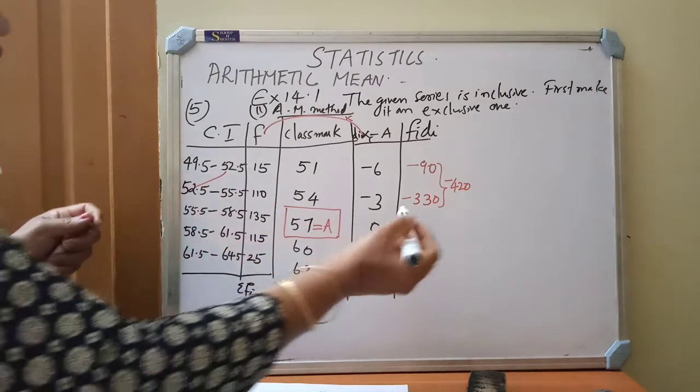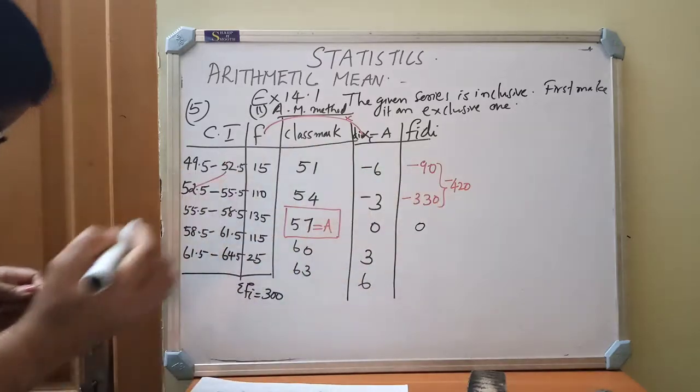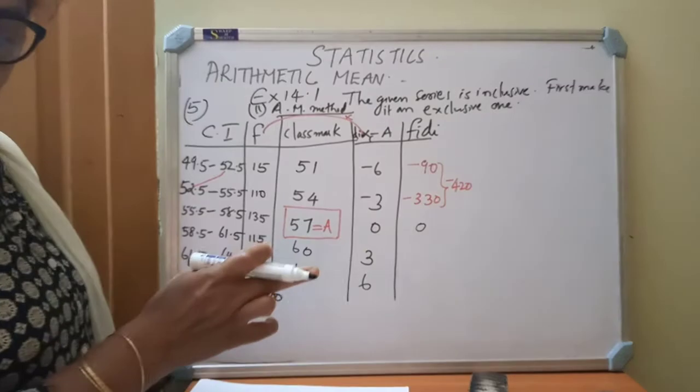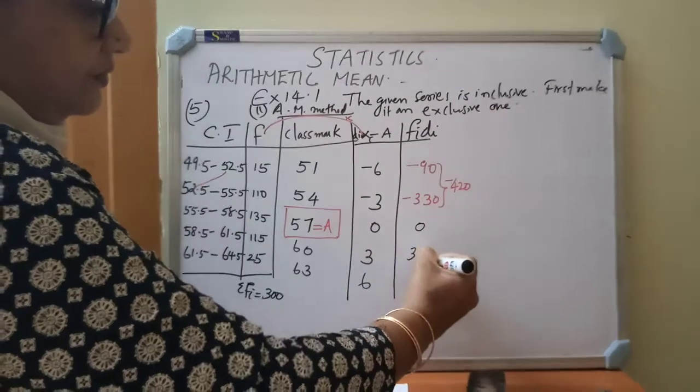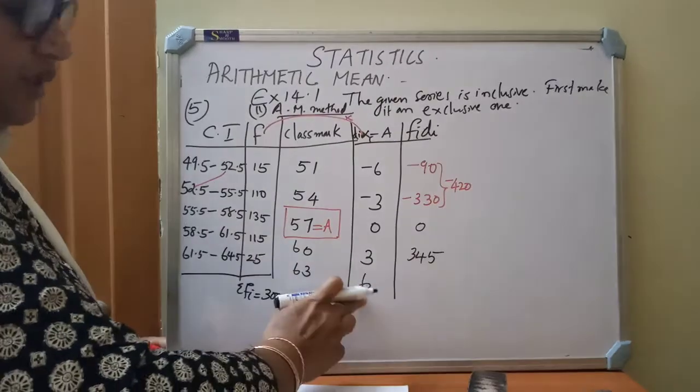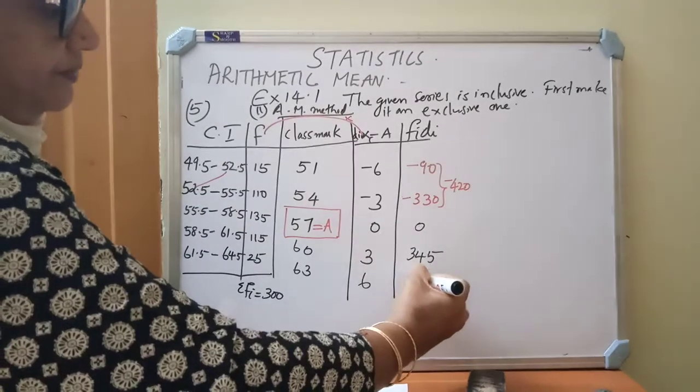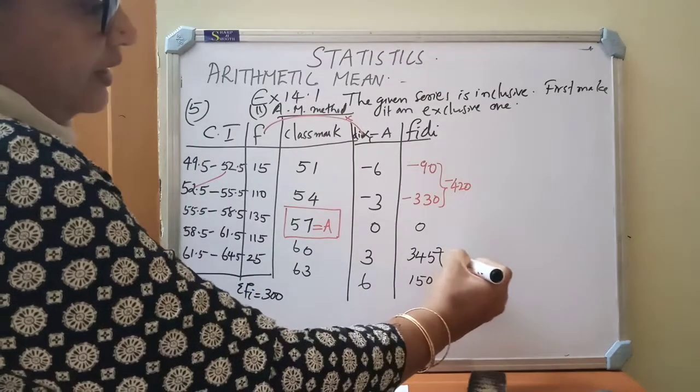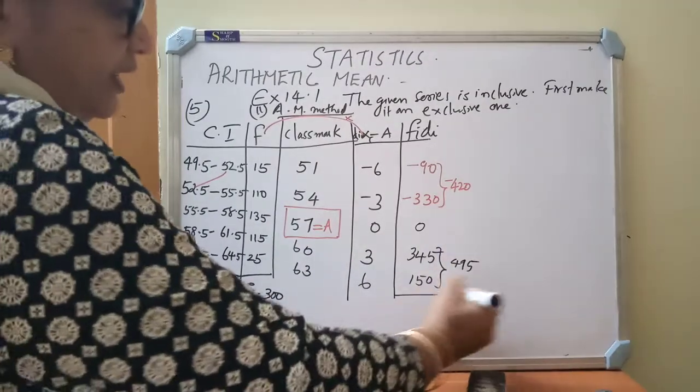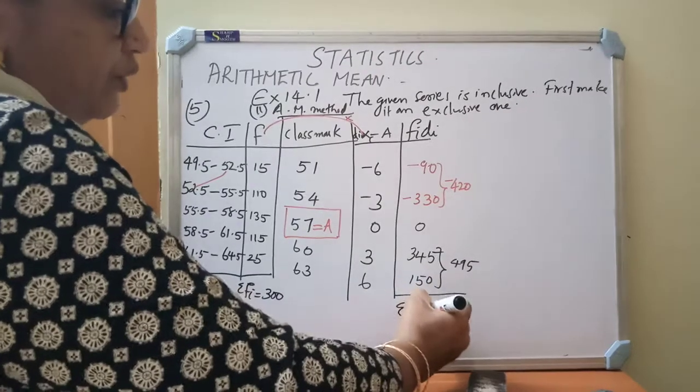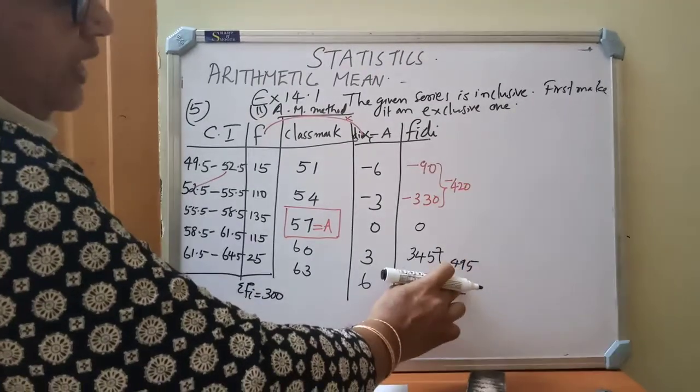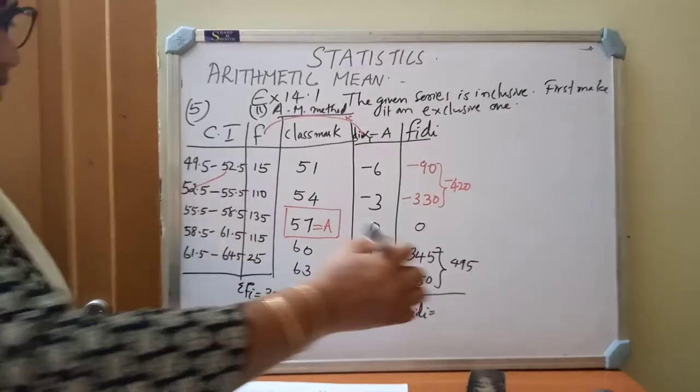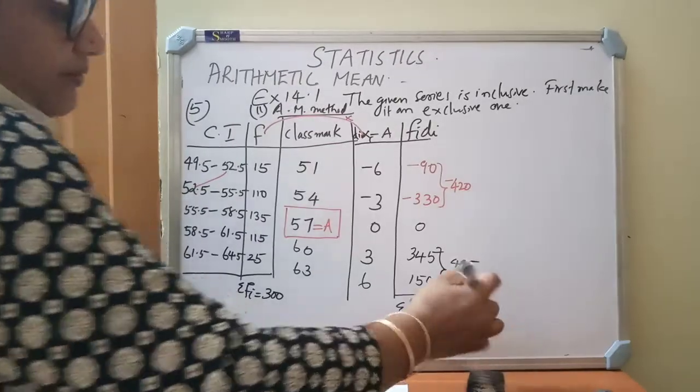Next, positive value. 0 into 57, 135 into 0, you will get 0. Then 115 into 3 is 345. 25 into 6 is 150. So these two addition, what are you getting? 495. So we must find out sigma fi di. For that, you must see the difference of 495. Because 495 is greater, so the positive value you will get. You will get the difference of these two as 75.